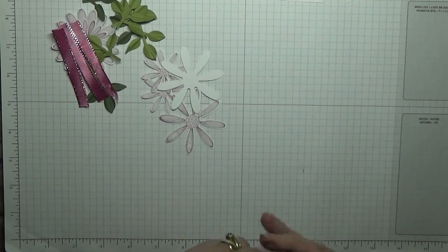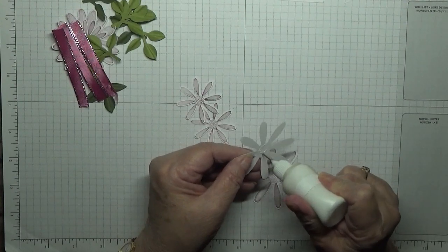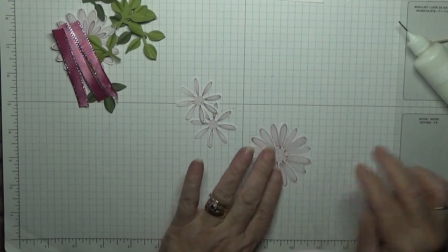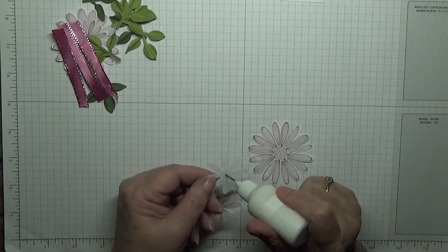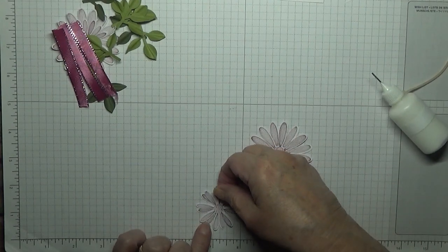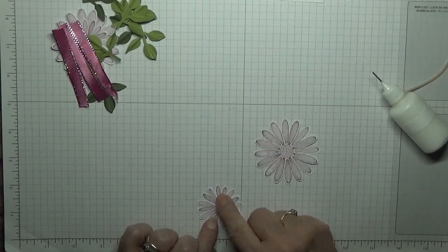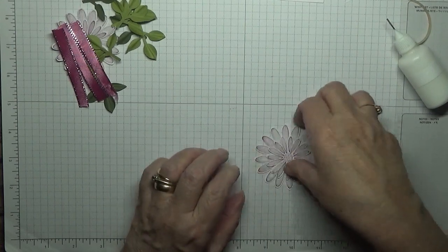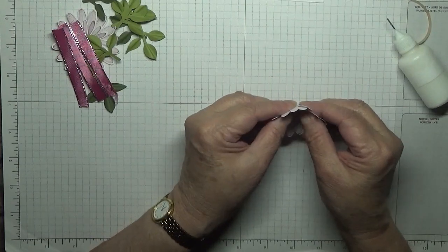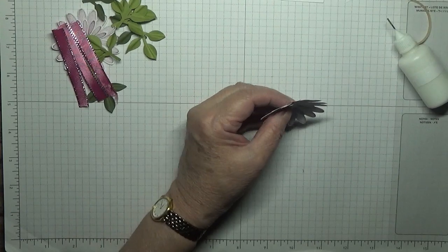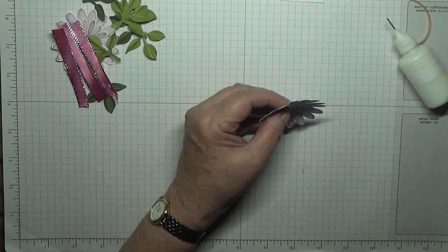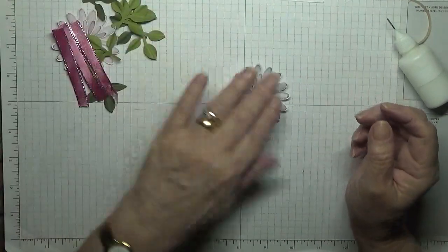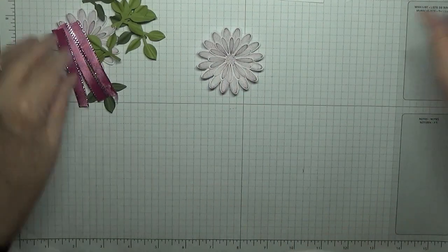We'll just glue these together. Put glue in the center and then glue them offset from each other. Same with that one. And then we just glue this in the middle of the big one. And then we just push in the middle and bring it up. And that's our flower done. We need three of them, which I've got here.